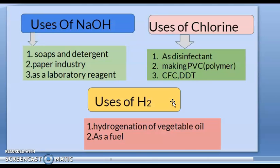Uses of NaOH: it is used in soaps and detergents, in the paper industry, and as a laboratory reagent. Chlorine is used as a disinfectant and for purifying water, making PVC (polyvinyl chloride), CFCs (chlorofluorocarbons), and DDT (dichlorodiphenyltrichloroethane). Hydrogen is used for hydrogenation of vegetable oils (refined oil) and as a fuel.